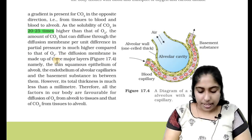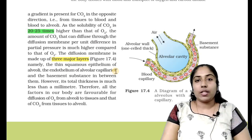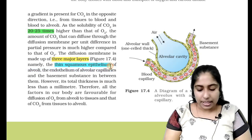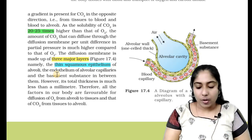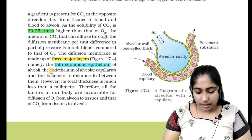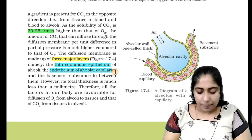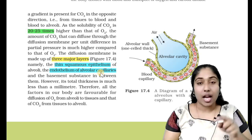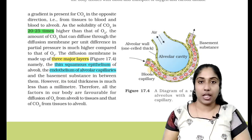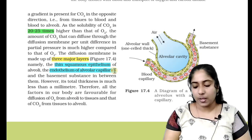The diffusion membrane is made up of three major layers. If you have a diffusion membrane in the alveolus, this alveolus has 3 layers. The first one is the thin squamous epithelium of alveoli — this is a single cell layer called squamous epithelium, so squamous epithelium is one layer. The next layer is the endothelium of alveolar capillaries, which lines the alveolar cavity. The endothelium is the lining of the capillaries; all blood vessels are lined by this endothelium.